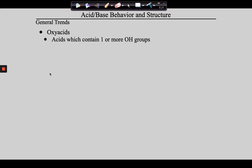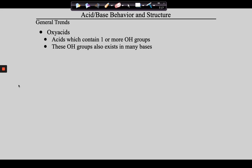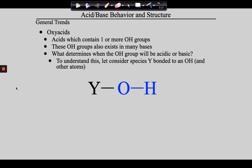Oxyacids contain OH groups. But what else contains OH groups? Bases — strong bases in particular, and even weak bases like aluminum hydroxide. So we need to separate these. What determines whether a YOH compound will be an acid or a base? Think of the old adage that a chain is only as strong as its weakest link. Let's replace Y with sodium. We now have NaOH. We're going to call the Y-O bond number one and the O-H bond number two.